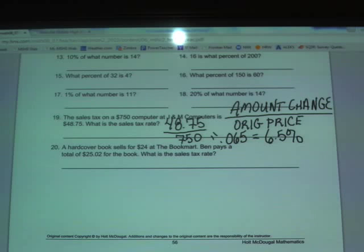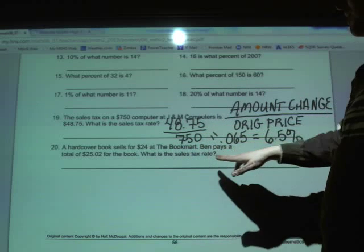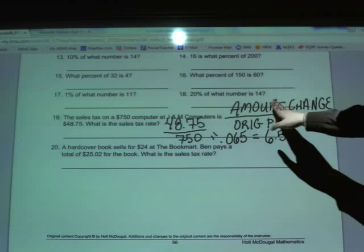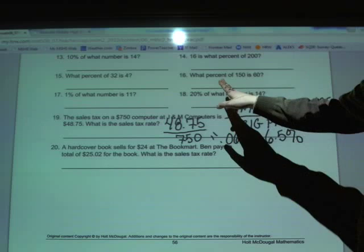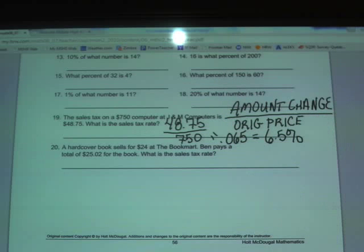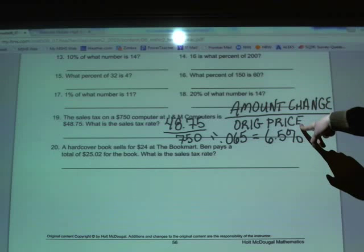Now, question 20 I'm going to leave for you to do on your own, but I'm going to help you set it up a little bit. It says a hardcover book sells for $24 at the bookmark. Ben pays $25.02 for the book. What is the sales tax rate? So they didn't give you outright the amount of change here, and that's what's different about this question from the last question. You have to find the amount of change before you can divide by the original price.